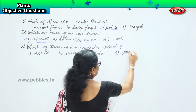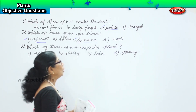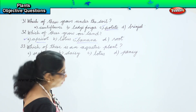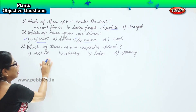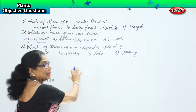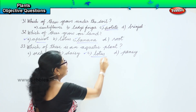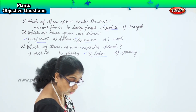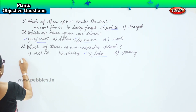They are asking for a water plant. Which of these is an aquatic water plant? Orchid? No. Daisy? No. Pansy? No. Your answer is option C — lotus is a water plant, it is aquatic.